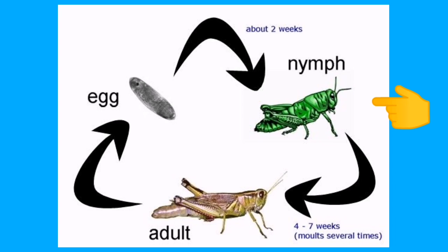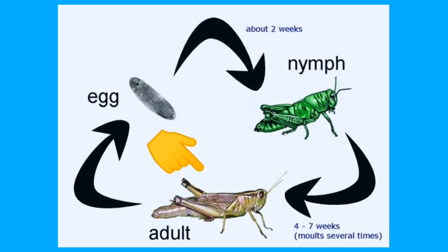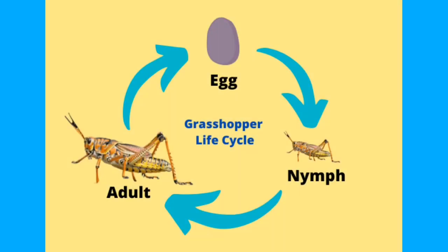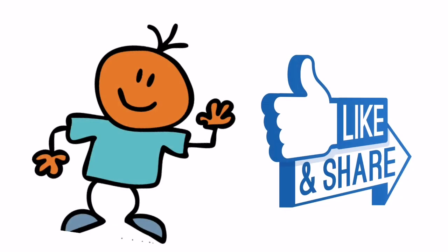Each time the nymph sheds its skin, its wings become bigger. Then finally, the final shedding produces an adult grasshopper. To recap, the three stages are: egg, nymph, and adult.